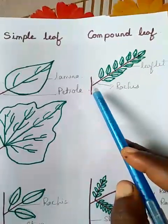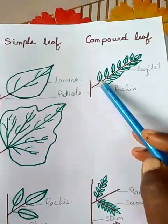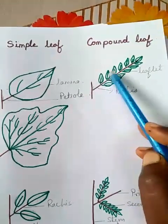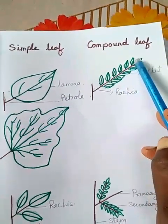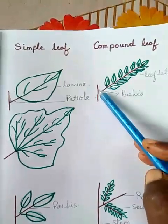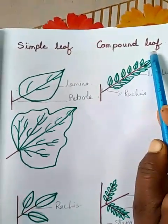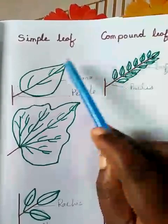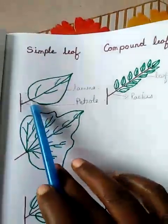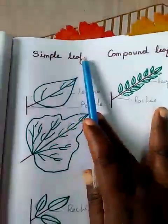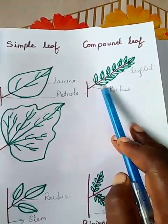A compound leaf means on a rachis — born on the stem — there are numerous small laminas or leaflets present. On a rachis, numerous leaflets are present; then it is called a compound leaf. In a simple leaf, on a petiole only one leaf lamina is present. In a compound leaf, on a rachis there are numerous leaflets present.